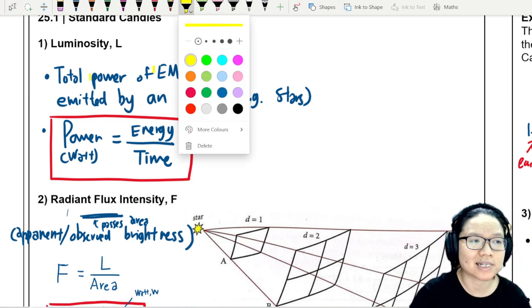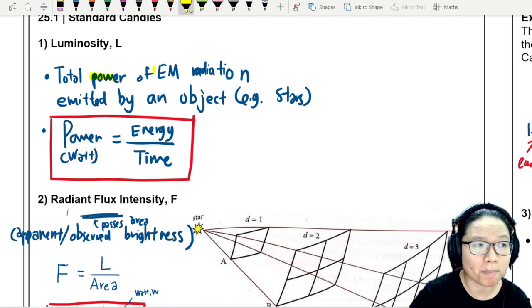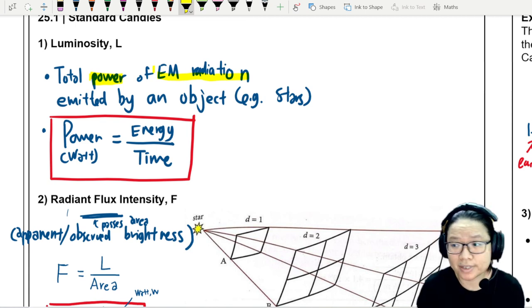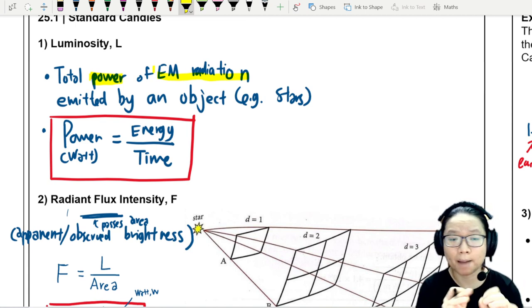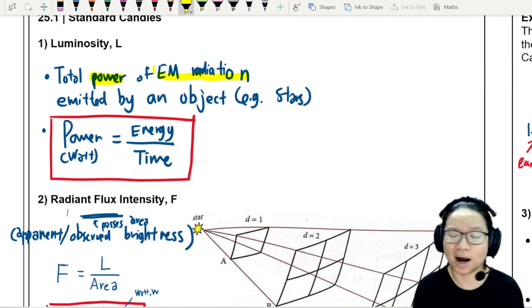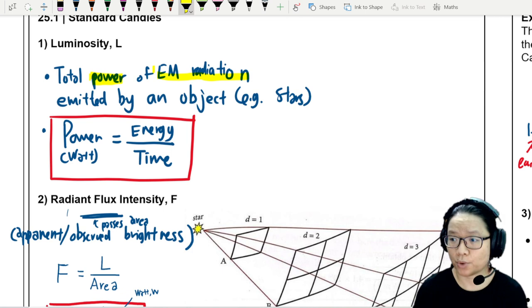Luminosity is another name for power, and specifically it is power of the electromagnetic radiation from the sun. Power is energy over time.